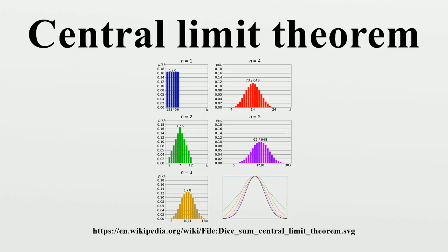The central limit theorem applies in particular to sums of independent and identically distributed discrete random variables. A sum of discrete random variables is still a discrete random variable, so we are confronted with a sequence of discrete random variables whose cumulative probability distribution function converges towards a CDF corresponding to a continuous variable. This means that if we build a histogram of the realizations of the sum of n independent identical discrete variables, the curve joining the centers of the upper faces of the rectangles converges toward a Gaussian curve as n approaches infinity. This relation is known as the de Moivre–Laplace theorem.